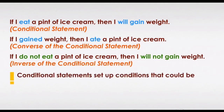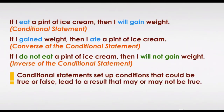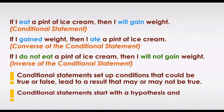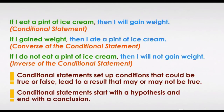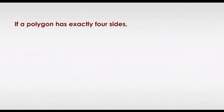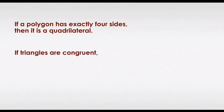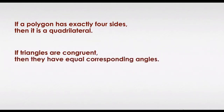Conditional statements set up conditions that could be true or false. These conditions lead to a result that may or may not be true. Conditional statements start with a hypothesis and end with a conclusion. Here are two examples: if a polygon has exactly four sides, then it is a quadrilateral. If triangles are congruent, then they have equal corresponding angles.